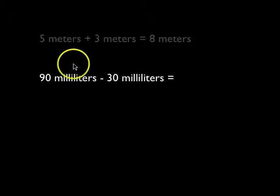With 90 milliliters minus 30 milliliters. We work the number part of the problem. 90 minus 30 equals 60. Milliliters minus milliliters is still milliliters. So this should be 60 milliliters.